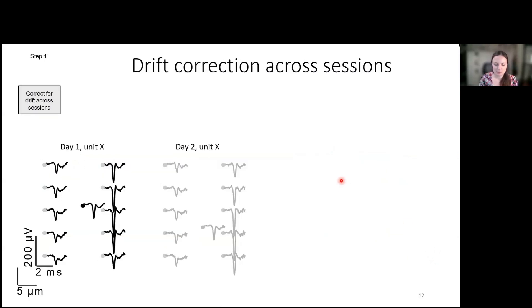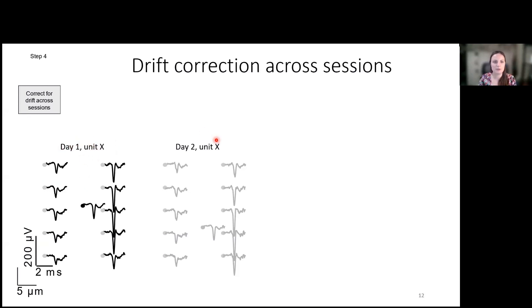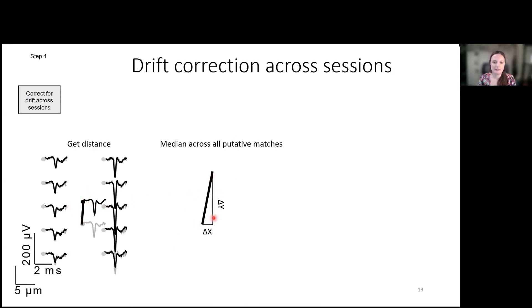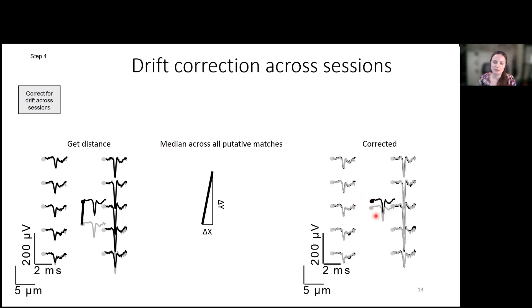First, we run into a problem that has already been described: there might be drift across recordings, which we need to solve because we don't stitch the recordings and therefore cannot track drift across recordings. So we first use this putative set of neurons to find how much drift we have. We look at unit X — presumably the same unit on day one and day two — and calculate the delta X and delta Y displacement. We do this for all putative matches across days, take the median, and apply median drift correction to the entire dataset. Then we repeat the first three steps with these drift-corrected data.